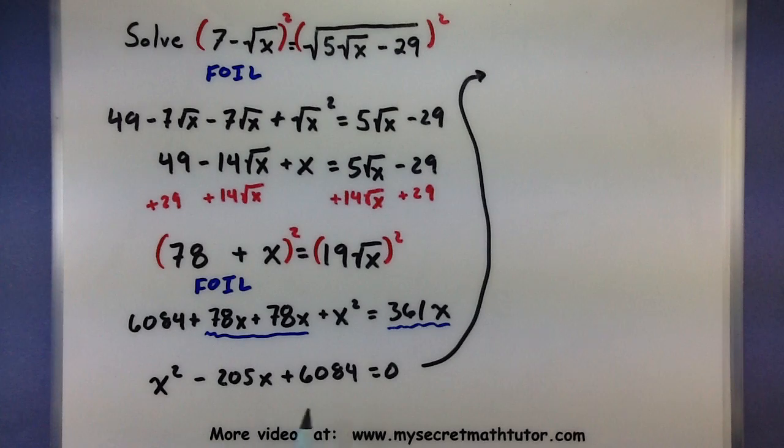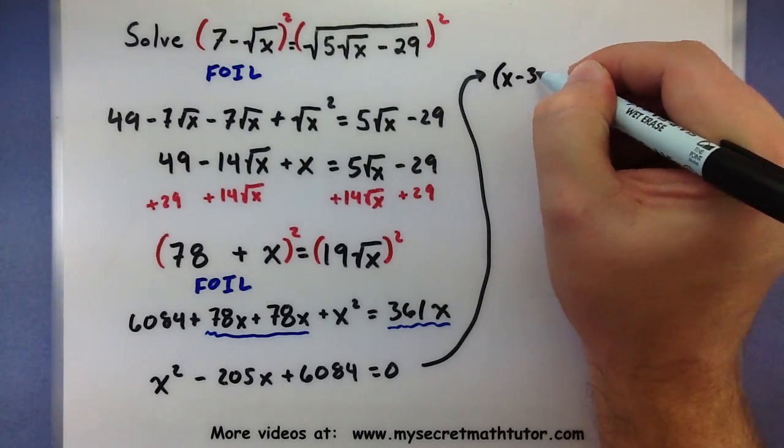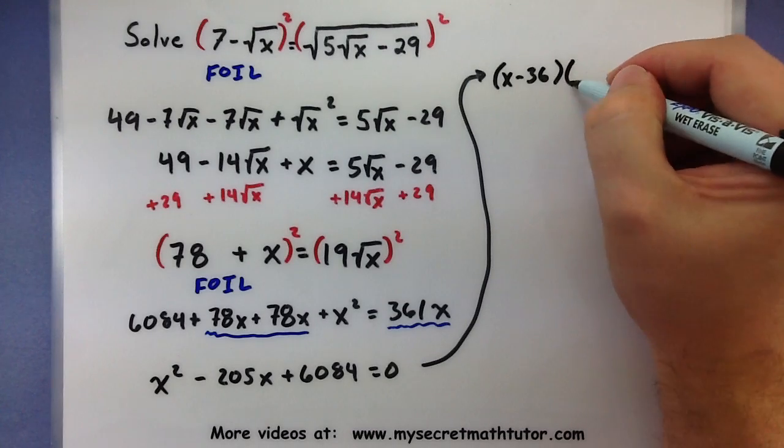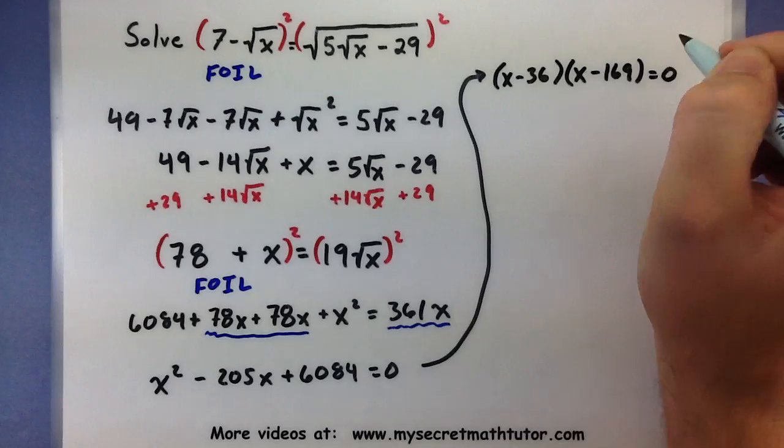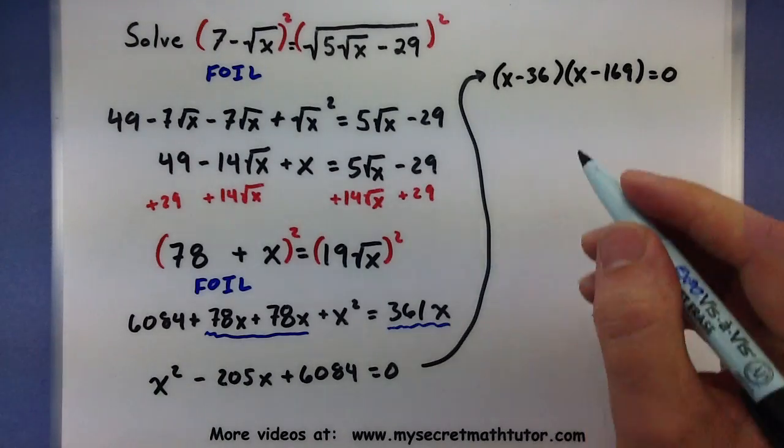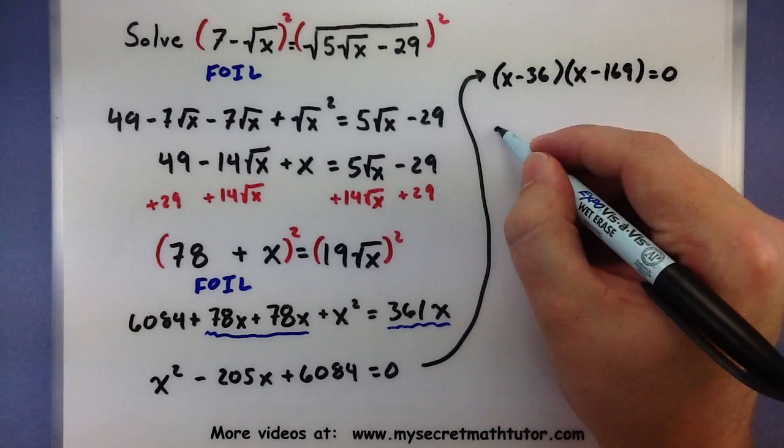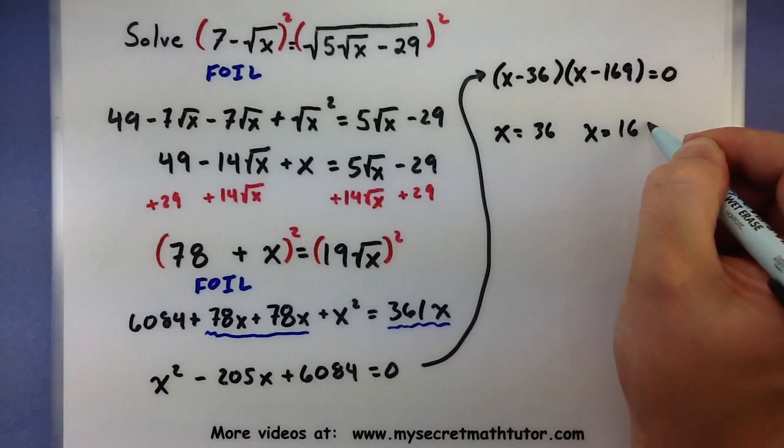So, let's go ahead and write our X squared term first. Combine all of our X terms on the left side. So, minus 205X. And we still have this 6084. This one is a fairly complicated looking quadratic. The numbers are really big in here. And this one might be a good one to actually use the quadratic formula on it. Again, I'm just going to save some time by factoring. And say this factors into an X minus 36 and an X minus 169.